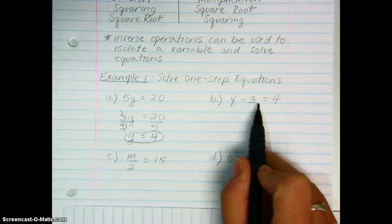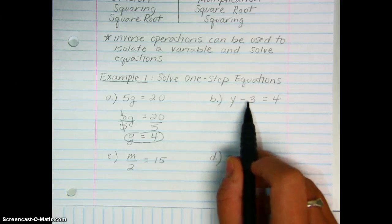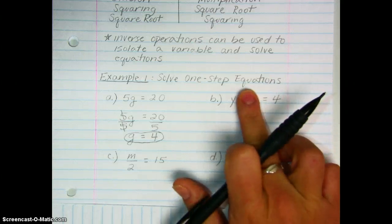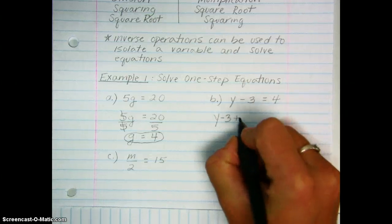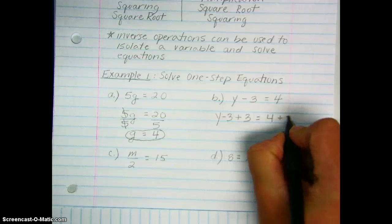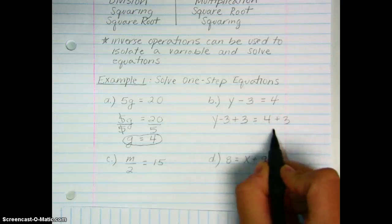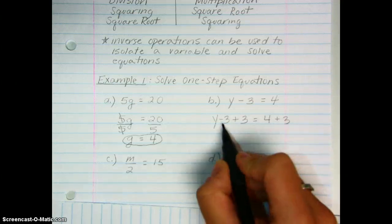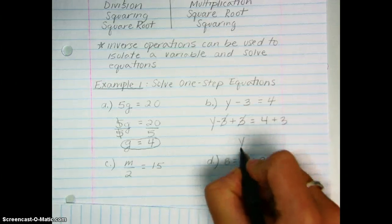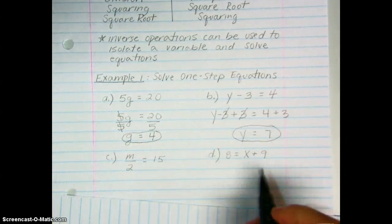Here, what minus three would give me four? I could guess and check, but I can also use inverse operations. What's being done to my variable? It's being subtracted by three. To get rid of that, I do the opposite — I add three to both sides of my equation. We have to do it on both sides because the equal sign states both sides are equal, so to keep it balanced, minus three plus three is zero. These cancel out, leaving y equal to seven — and that's the solution that makes this equation true.